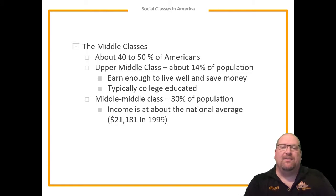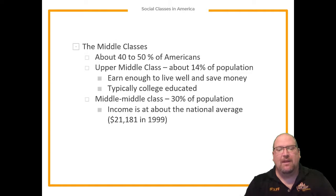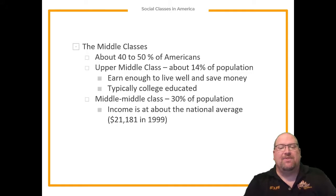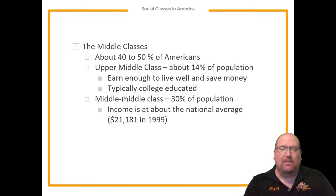The next level is the middle middle class, which makes up about 30 percent of the entire population. People in this group in 1999 made about $21,181 a year. That was about 20 years ago, so the current rate has obviously gone up, but you can get a sense of where these income levels fall.